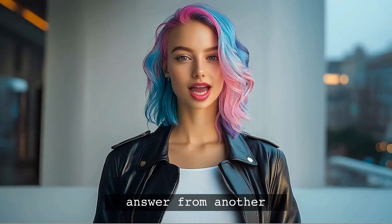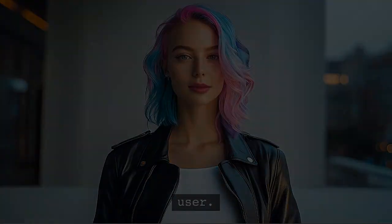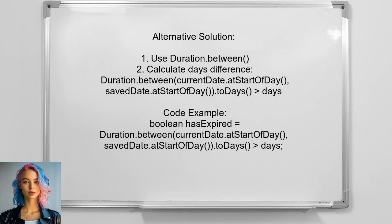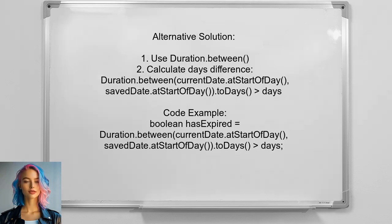Another alternative approach suggests using the Duration class from the java.time package. They recommend calculating the difference in days between the current date and the saved date using the Duration.between method, which checks if the difference exceeds the specified number of days.